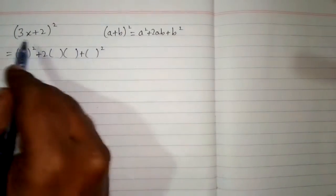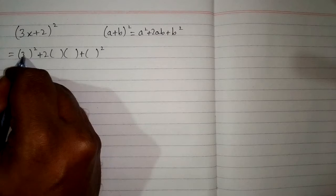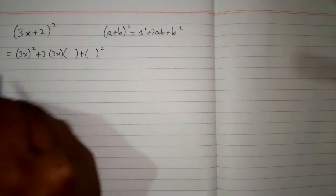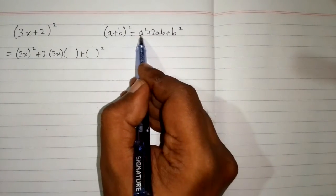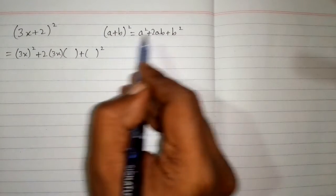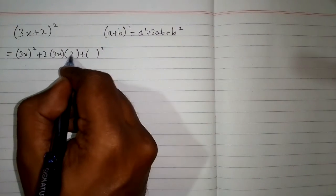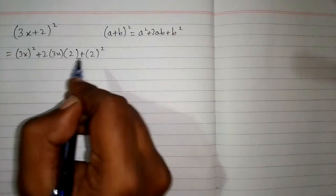Now the value of a is 3x so we will write 3x over here and over here. Because we have a over here and over here and then in place of b we can put 2. So we will write 2 over here and over here.